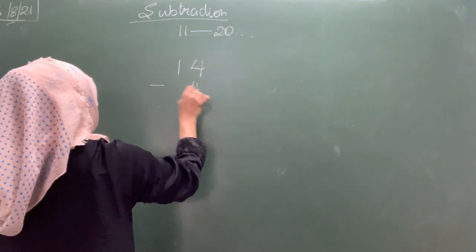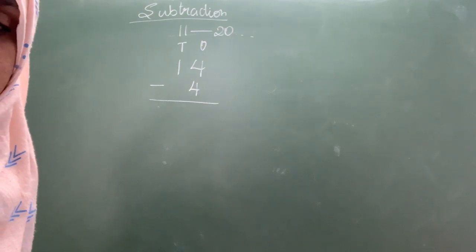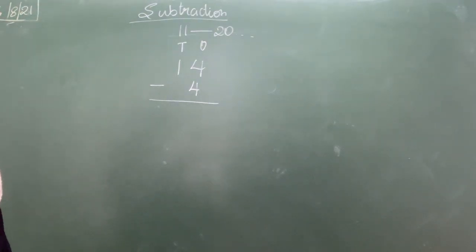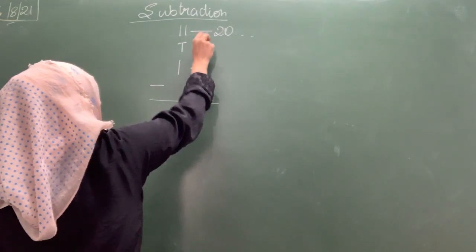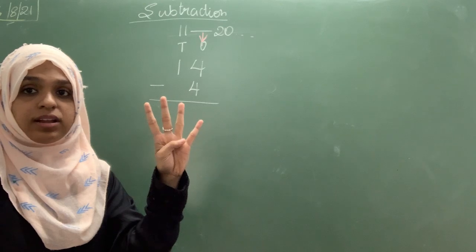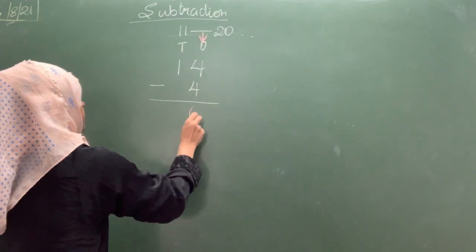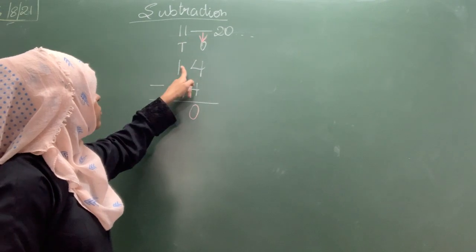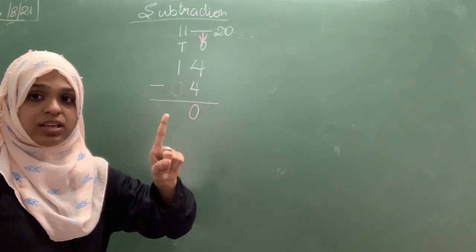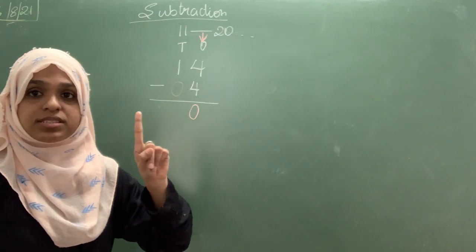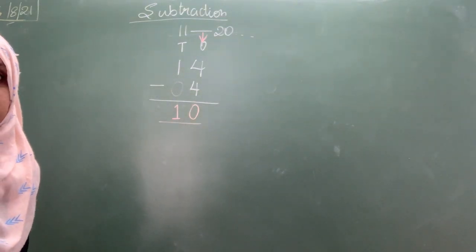So if I write 14 minus 4. This is your 1s and 10s. In addition, how we used to start? We used to start from 1s column. Same way. But only thing we are going to do minus. Start from your 1s column. 4 minus 4. 4 is there, cut down 4. 1, 2, 3, 4. How much is left? 0. And go to the next column. 1 minus nothing. Nothing means what? It is 0 only. Therefore, 1 here and you are not cutting down anything. It is the same. So it remains 1 only. So your answer is 10.